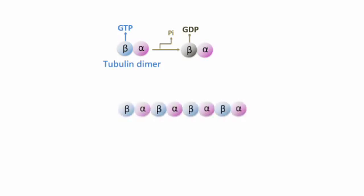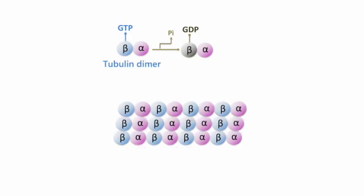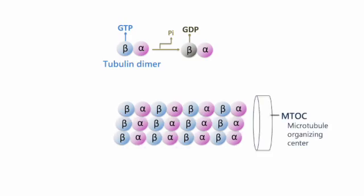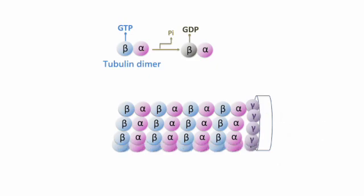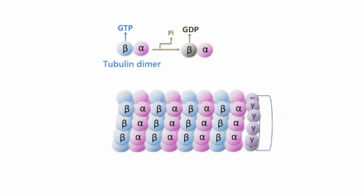Alpha and beta tubulin subunits assemble into linear protofilaments. Microtubules are anchored in structures called microtubule organizing centers (MTOCs). The primary MTOC in a cell is called the centrosome.